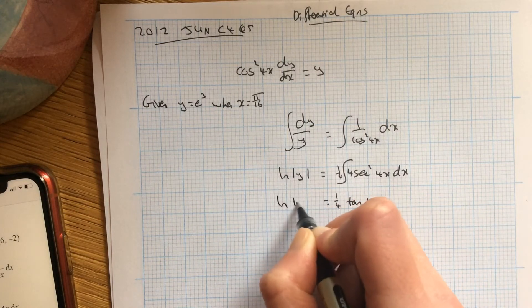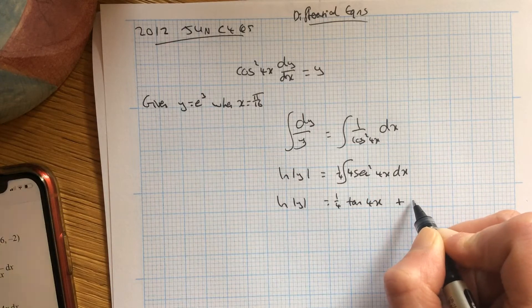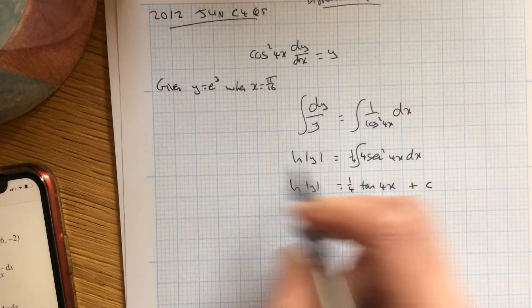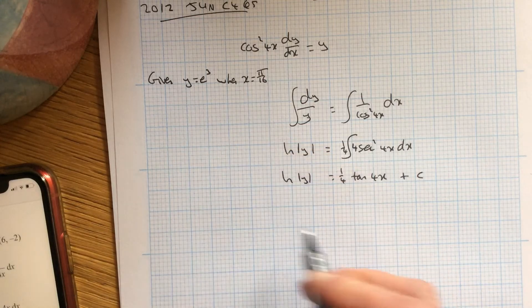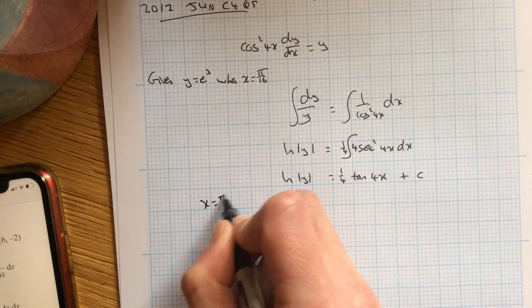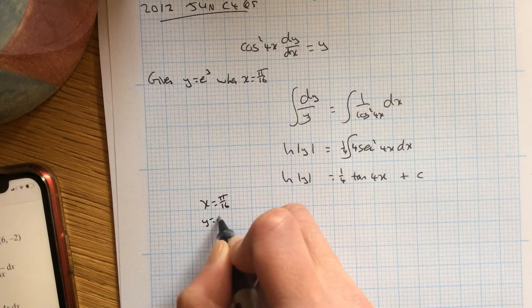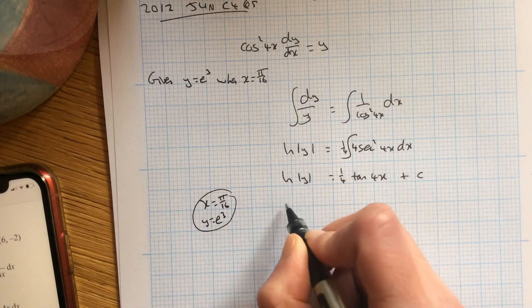So log y equals a quarter tan 4x add c. And you were told at the start, x is π over 16, when y is e cubed.